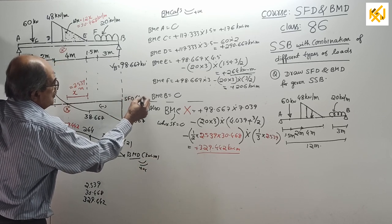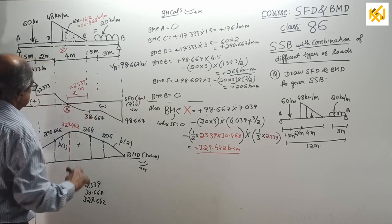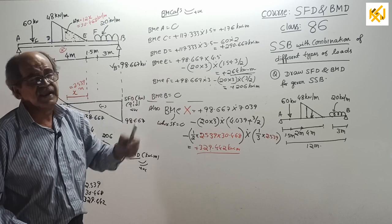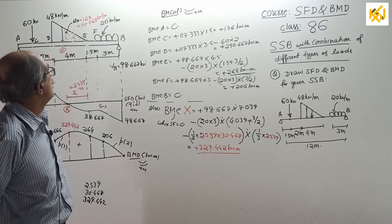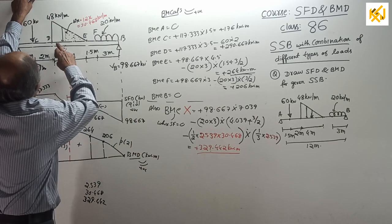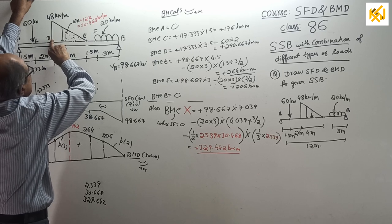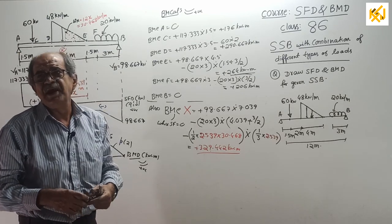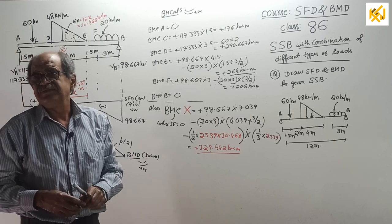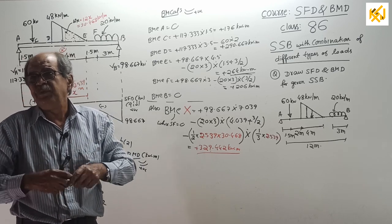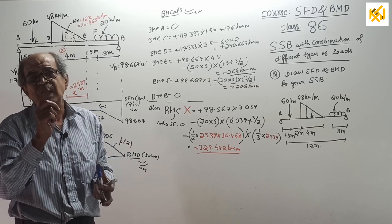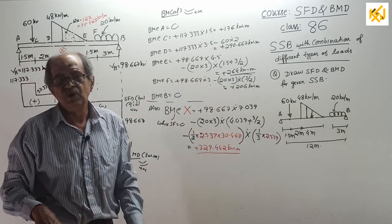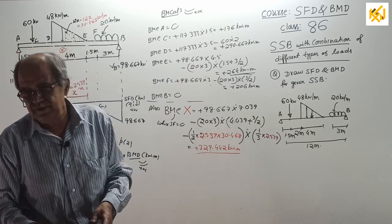Now work out this question thoroughly, practice, get all the values and get ready for next class, class 87. I will continue with more problems with combination of UVL. I may change the UVL to this type: from here to here maximum. I may put a point load in between UVL. All those combinations I will work out. Maybe another seven or eight classes I will go for only combinations. Then I will go for the new part, the most important where maximum composition is there: beam with the couple. That will come after all these combinations are over. Be tuned. See you in next class, class number 87. Thank you.